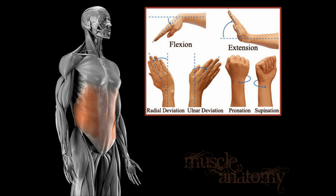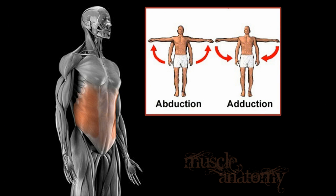I'll also talk about pronate and supinate. An easy way to remember supinate is to cup your hand like you're holding a bowl of soup, and if you dump the soup, that's pronation. For abduction and adduction, remember that adduction is adding to the body, and abduction is taking away.